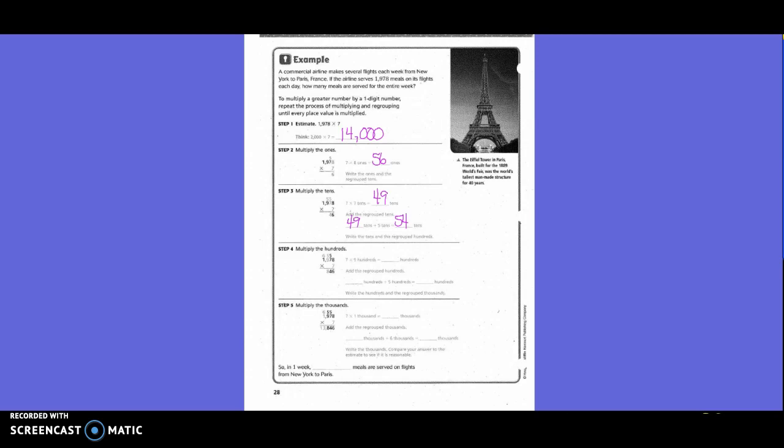So then we move to the hundreds. So they said 7 times 9 hundreds equals how many hundreds? 6,300. Now it says add the regrouped hundreds. So we said we had 6,300 plus the 5 that we regrouped. What would that be? 6,800. So we write the 8 and carry the 6.